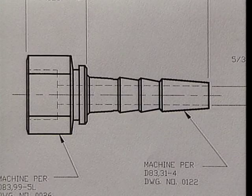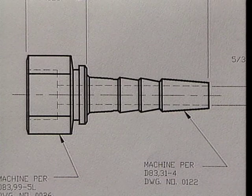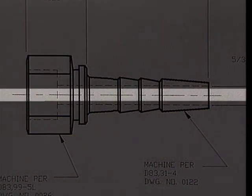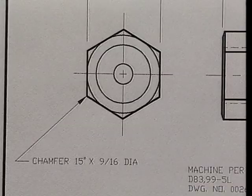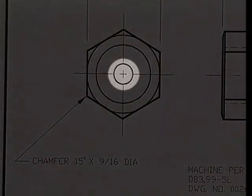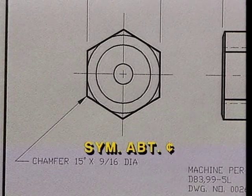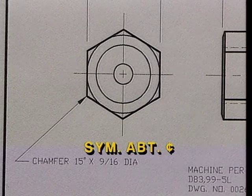To show that the part is symmetrical, the draftsperson will draw a front view which shows the center line — a series of long and short dashes. A small cross on the side view indicates the center of a cylindrical part. Sometimes you'll also see the notation 'symmetric about center line.'